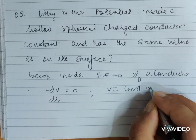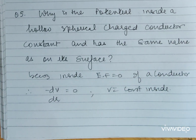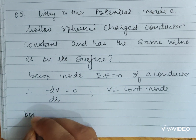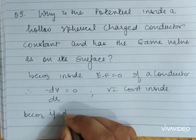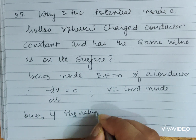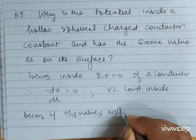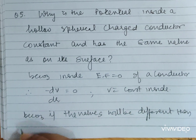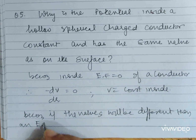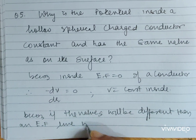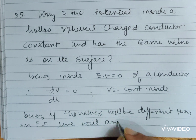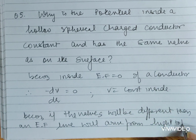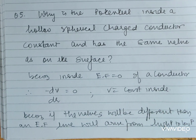V is constant inside and has the same value as on its surface, because if the potential values were different, an electric field line would arise from high potential to low potential. That is the answer.